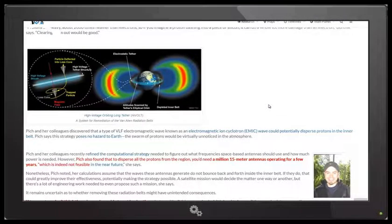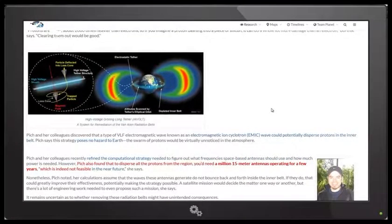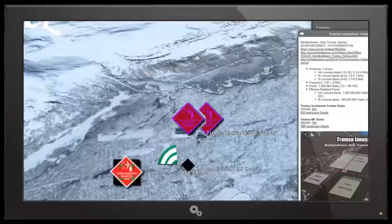So saving satellites with radiation belt remediation and modifying space weather with HAARP. You heard it here. I hope that clarifies a lot of questions that people have had, and unless someone like you cares a whole awful lot, nothing's going to get better, it's not.